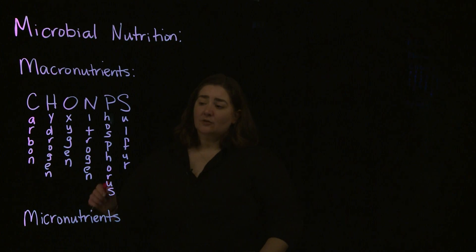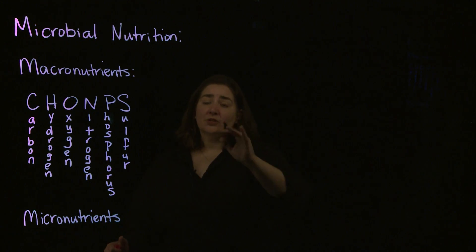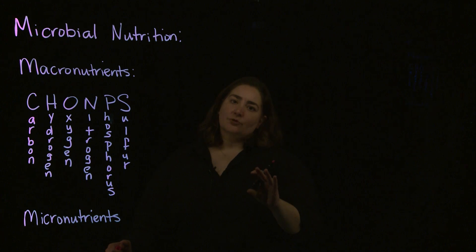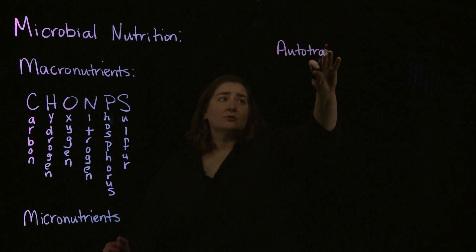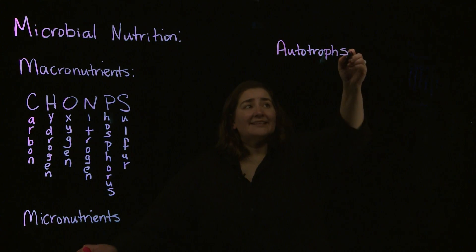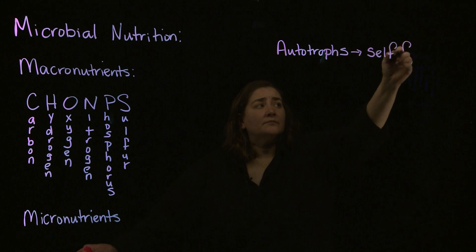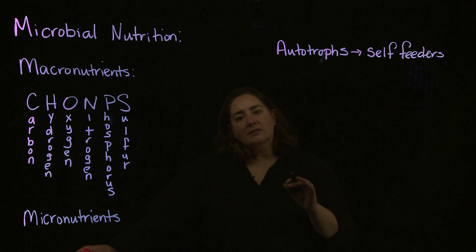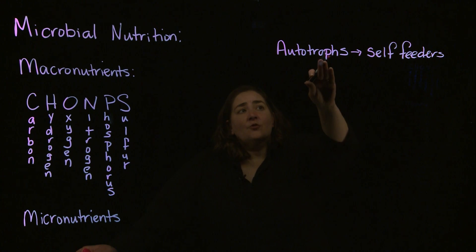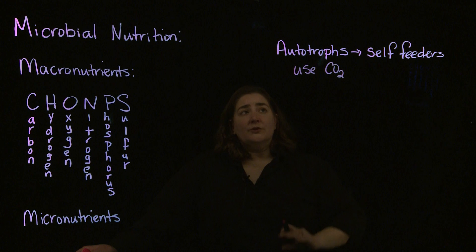When we're talking about microbial nutrition, we're talking about what elements the bacteria need in order to function. In a previous video, I talked about autotrophs. These are considered self-feeders — they don't require another organism in order to survive. Our autotrophs use atmospheric carbon dioxide as their carbon source, and because they use carbon dioxide, they aren't dependent on other organisms.